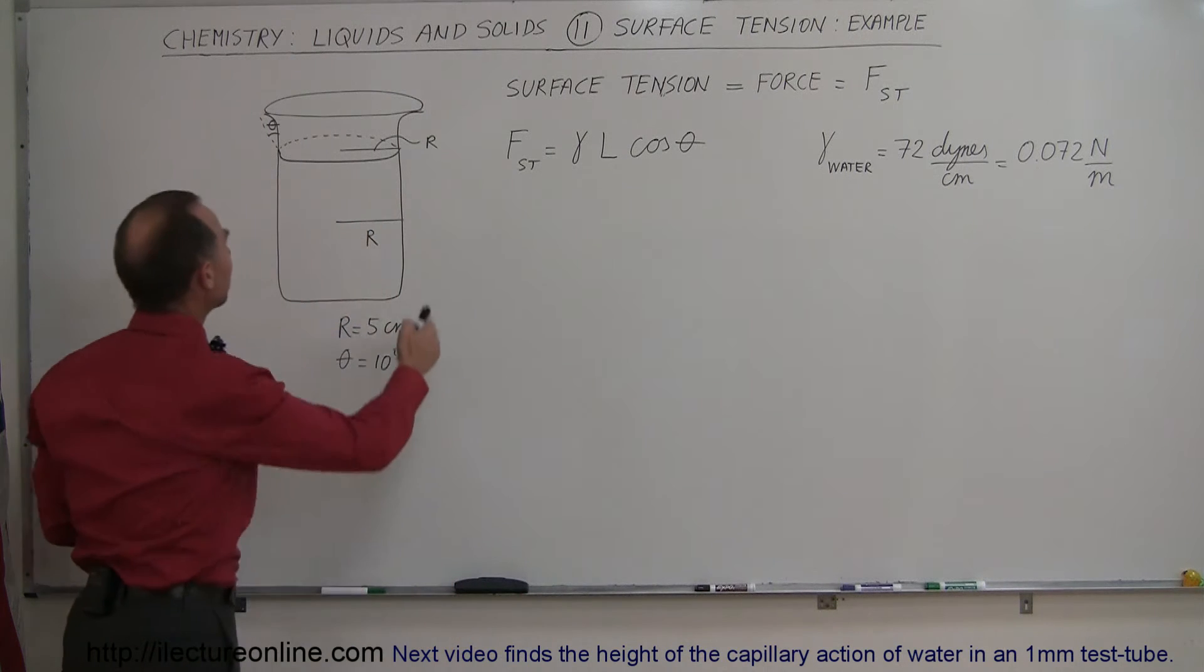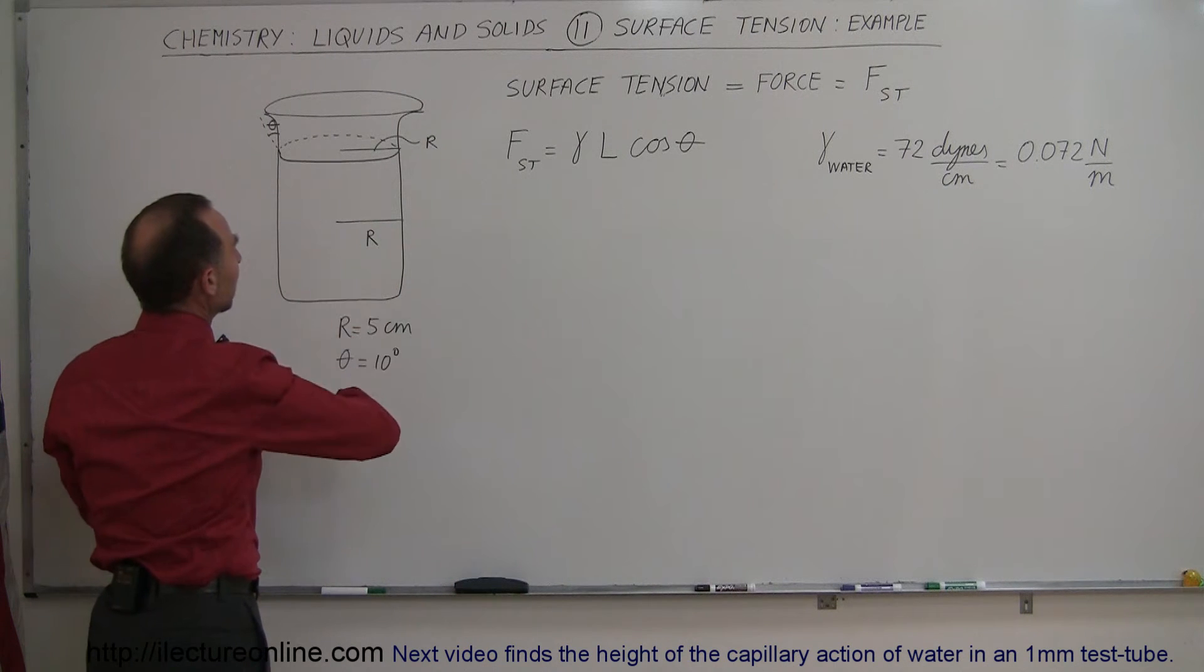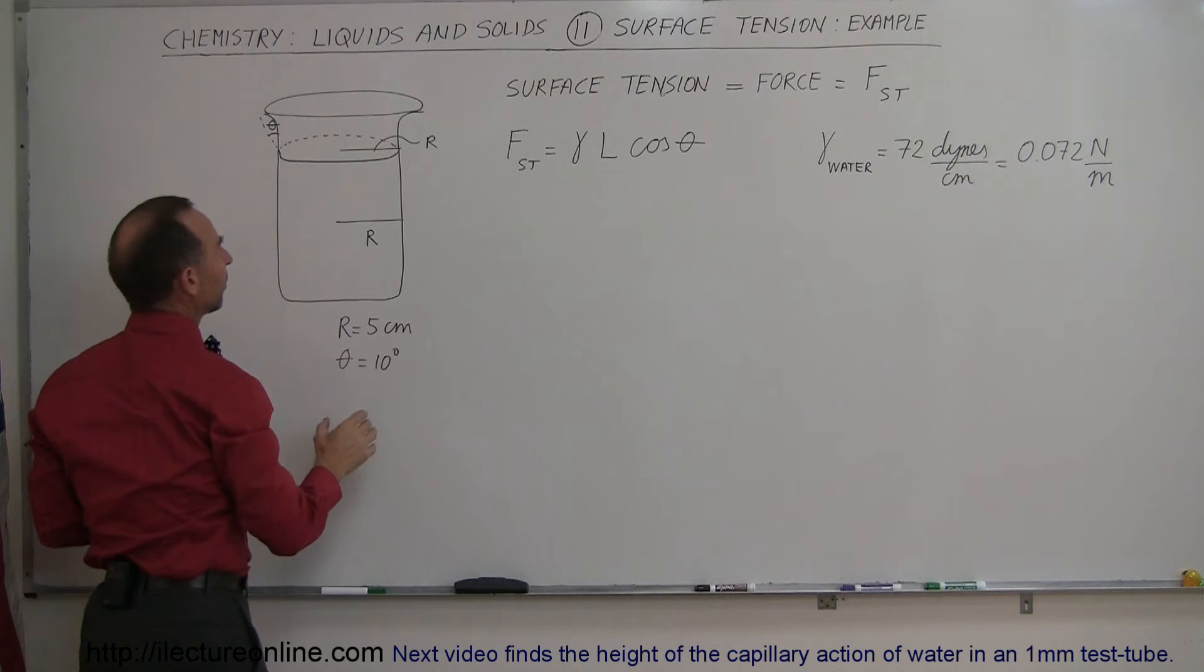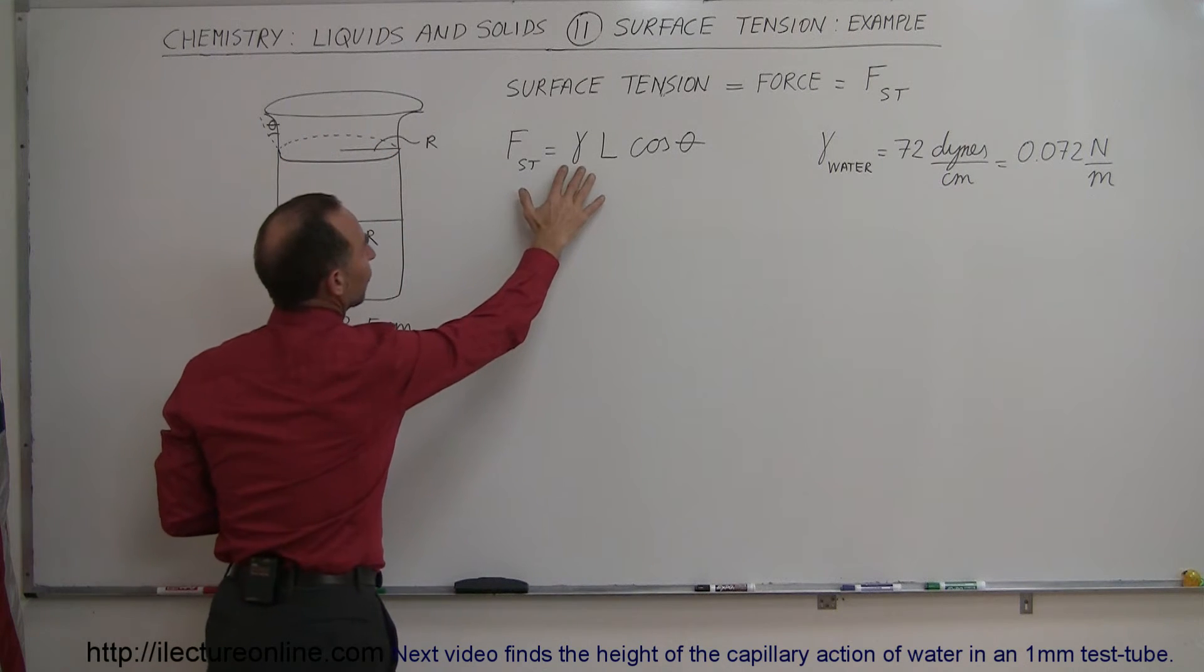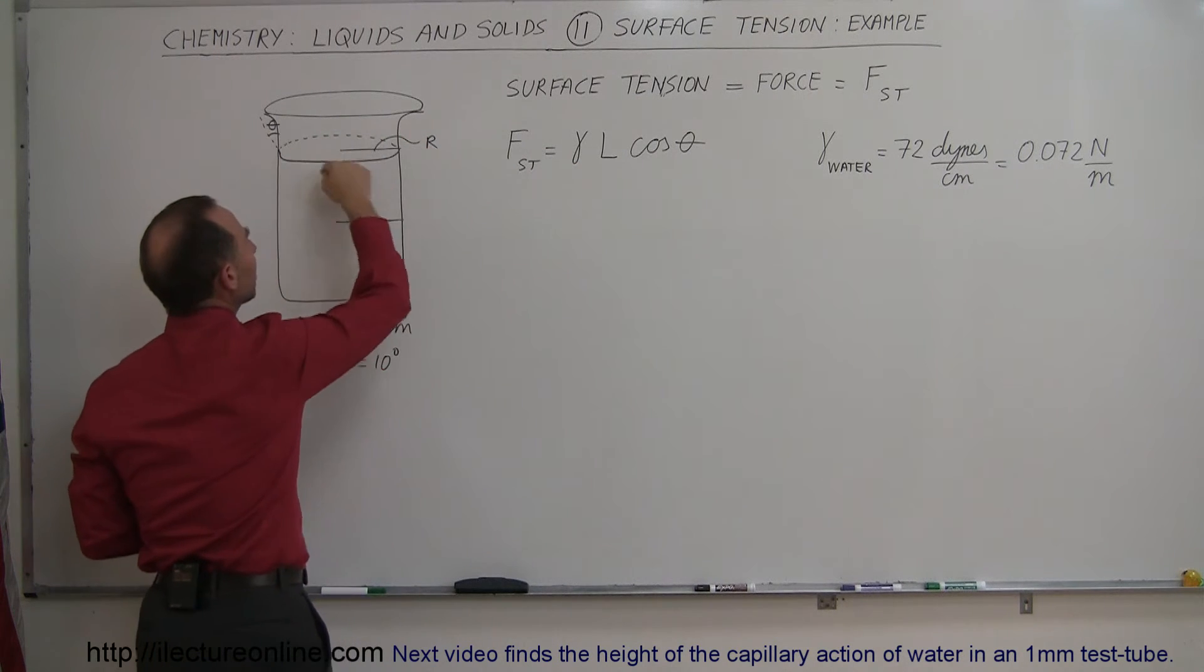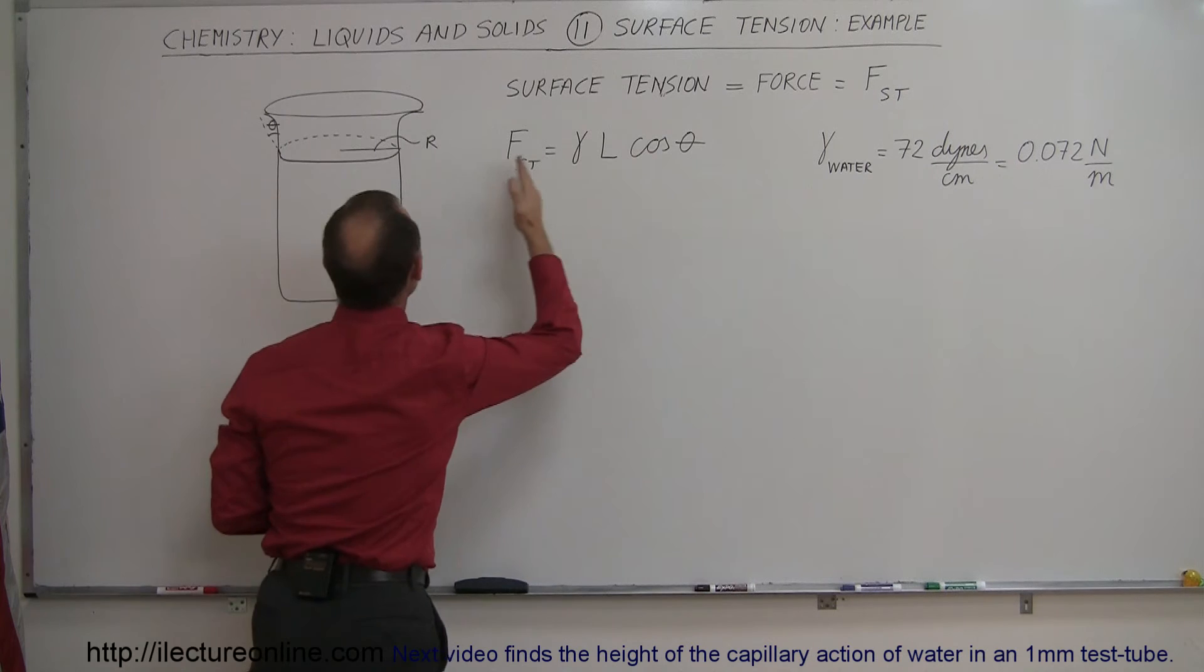So imagine the beaker right here. You want to calculate the surface tension along the rim of the beaker. Then we're going to multiply the coefficient of the surface tension times the length, which means the circumference of the beaker, times the angle that it makes with the surface.